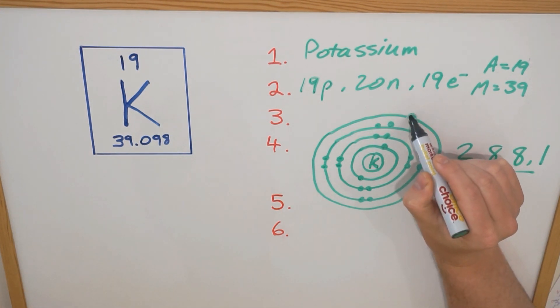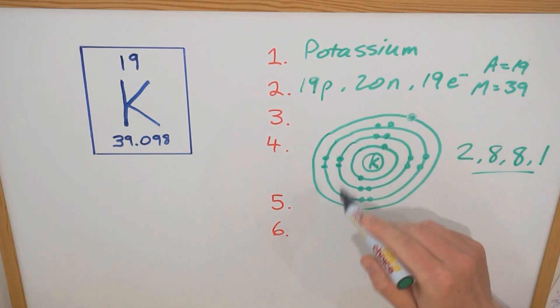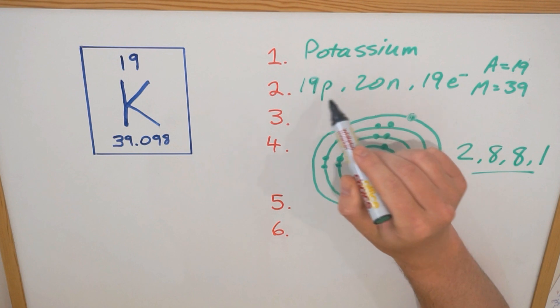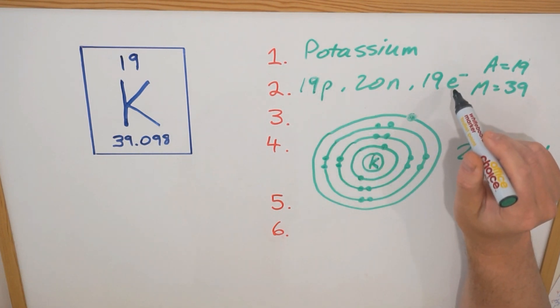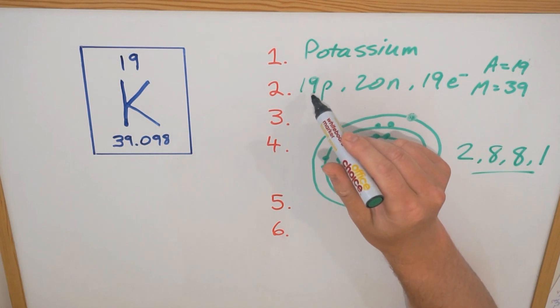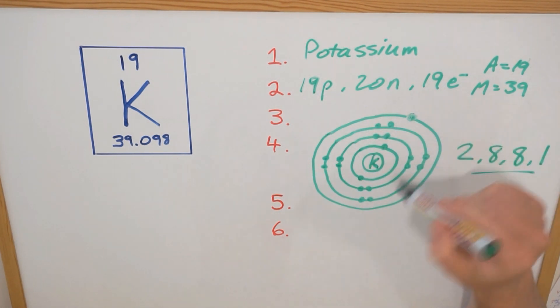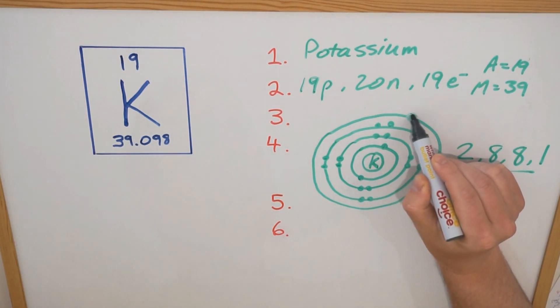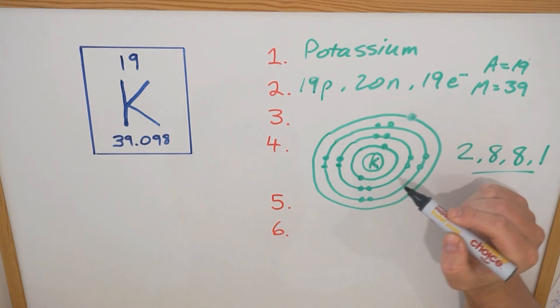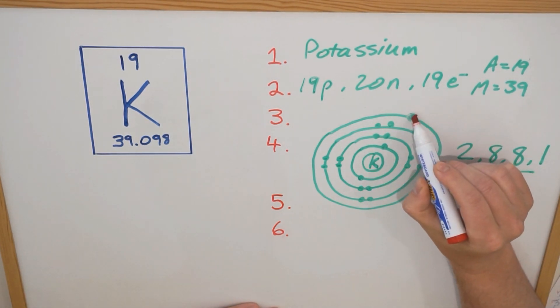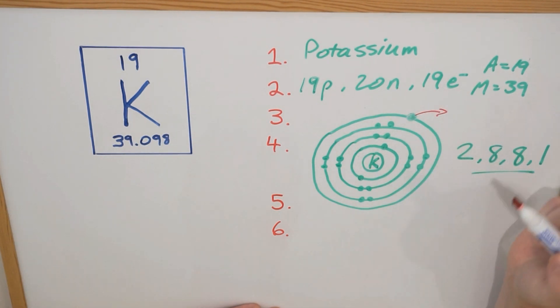The last thing I want to cover in this lesson is what type of ion potassium is going to become. When we're looking at ions, we're really just looking at the number of electrons in this outermost shell. An ion, if you recall, is when an atom has gained or lost electrons. Generally speaking, the number of protons, positive protons in an atom, is balanced out by the number of negative electrons. So in this case, 19 protons are balanced out by these 19 electrons. But atoms also like to have a full outer shell, and in this case it doesn't - we've got this one electron in this outer shell.